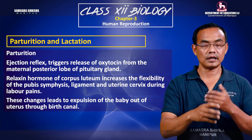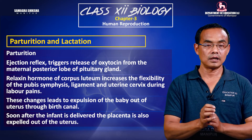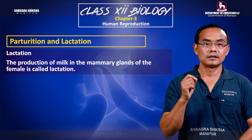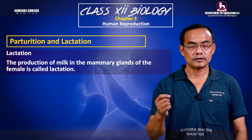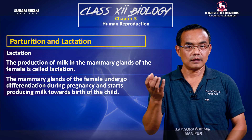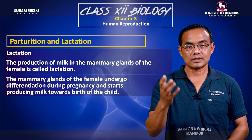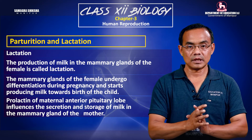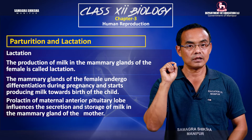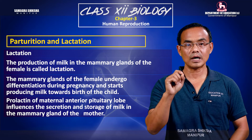Lactation involves the mammary glands. When you are pregnant, the mammary glands develop. The prolactin hormone, secreted by the anterior pituitary lobe, stimulates the mammary glands to produce milk, which is stored in the body.